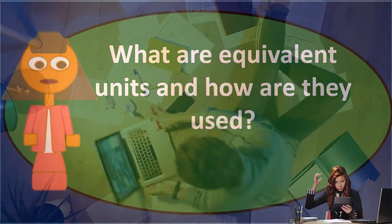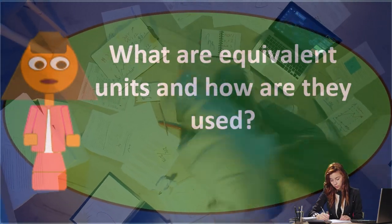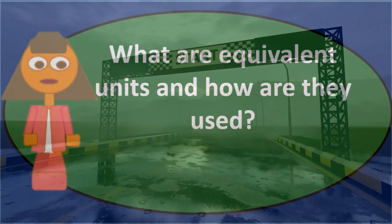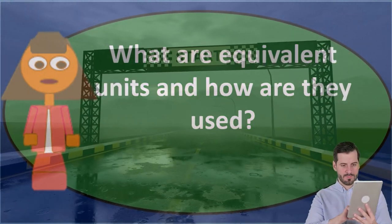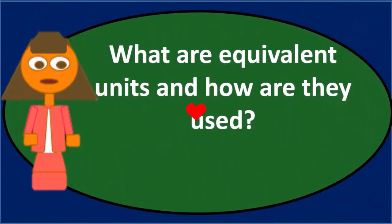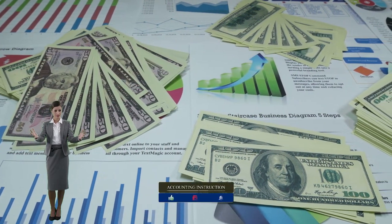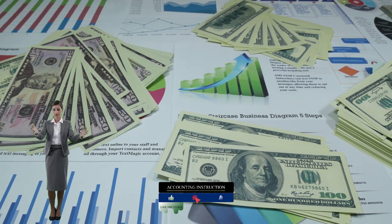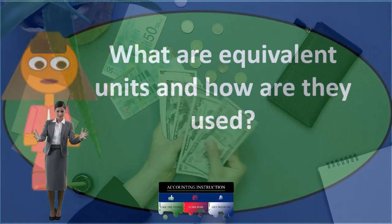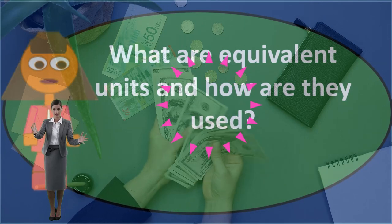To estimate equivalent units, there are a couple of methods we can use. We can assume a first-in, first-out method or an average method. For materials, we might assume they enter the process at the beginning under a FIFO-type approach. For conversion costs — which include labor and overhead — we need to estimate how much has been completed at a given point in time, determining how far along the items are in the conversion process.